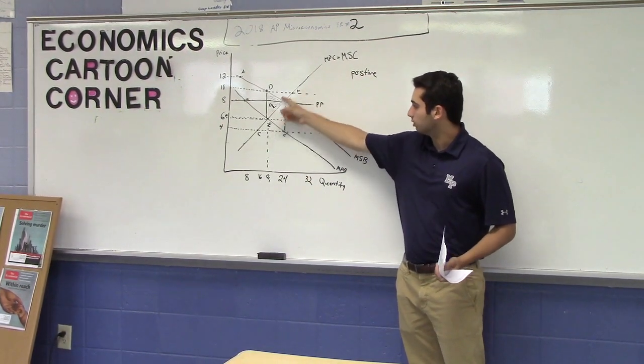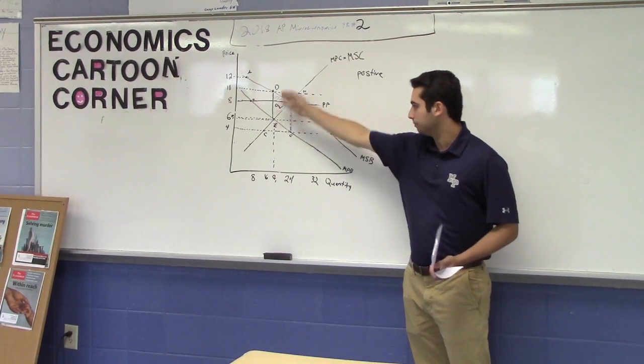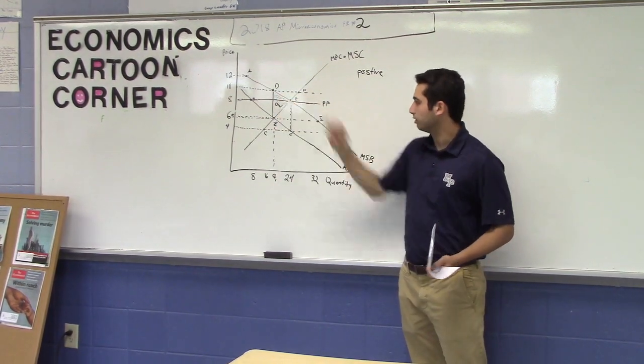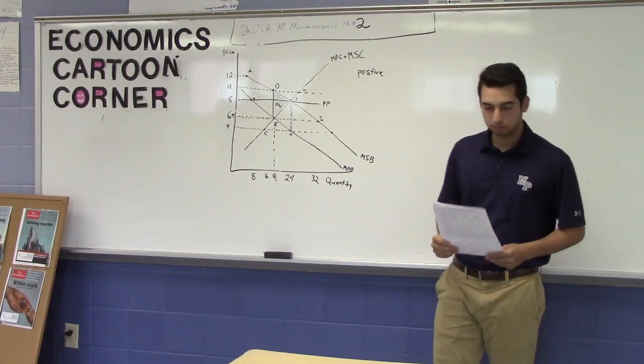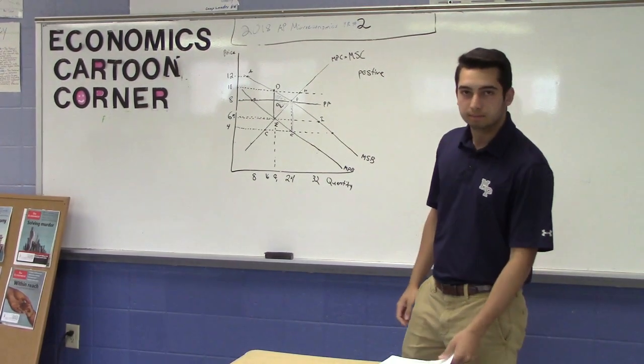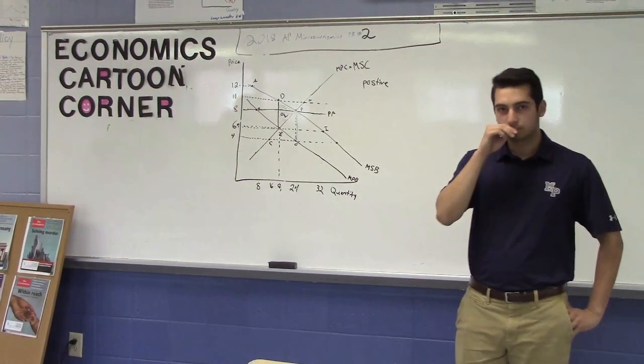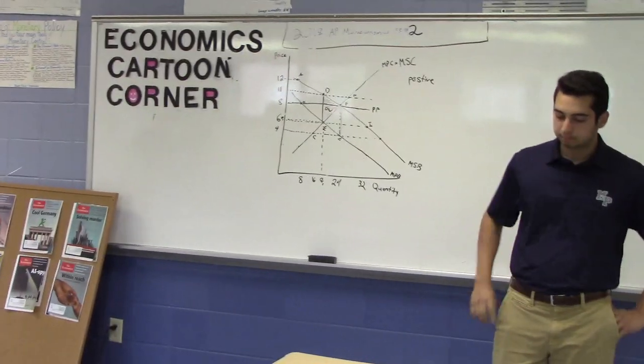So the area between these two, and then the quantity brought up from there, that's where the deadweight loss is in this example. Excellent. Economics. The other E word is efficiency. So deadweight loss is a loss of efficiency by not producing the allocatively efficient level. Very good.